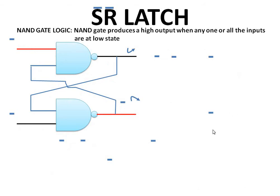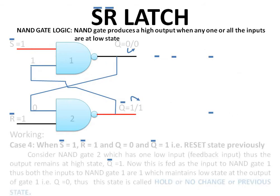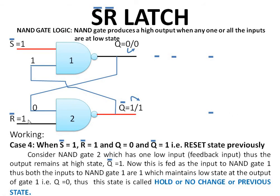The last case: when both the inputs are at high state. When one of the inputs is at high state to a NAND gate, the output depends on the other input. Rather, in this circuit, it depends on the past output, because the past output will be the input to the gate. So we need to consider the previous condition for the explanation.